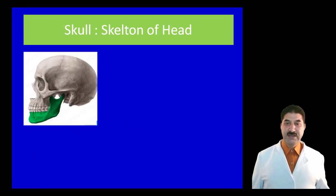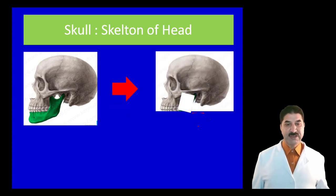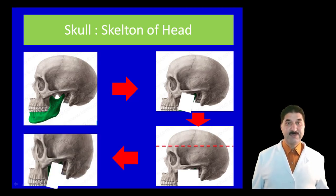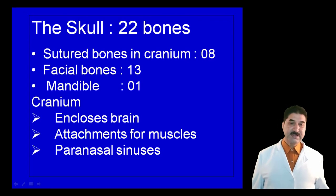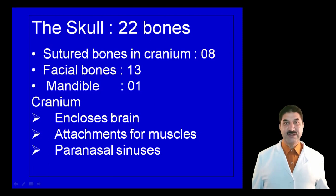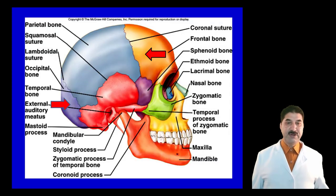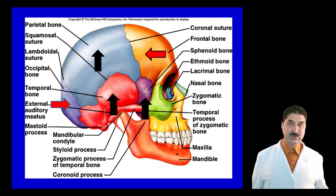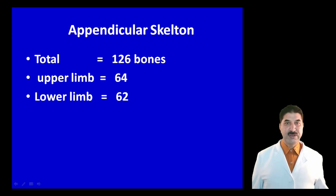The skull is the skeleton of the head. If we remove the mandible, it becomes the cranium; if we remove the skullcap or calvaria, it becomes the base of the skull. The skull consists of 22 bones: eight cranial bones, 13 facial bones, and one mandible. The function of the cranium is to enclose the brain, give attachment to muscles, and contain paranasal sinuses. The paranasal sinuses lighten the bone. Anteriorly there is the unpaired frontal bone, posteriorly the occipital bone, and paired bones include the parietal bones, temporal bones, and sphenoid.